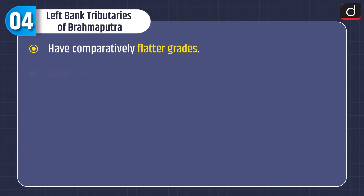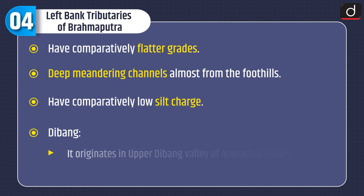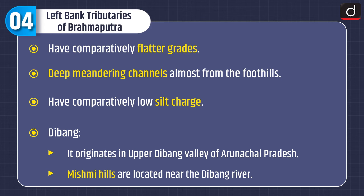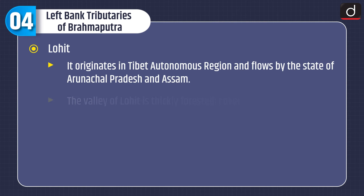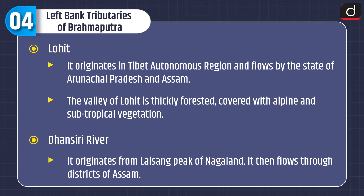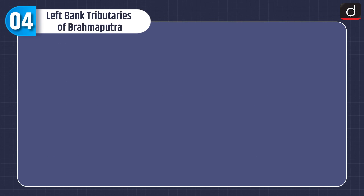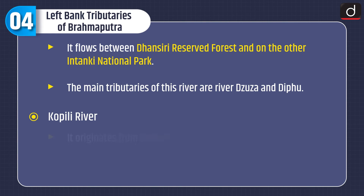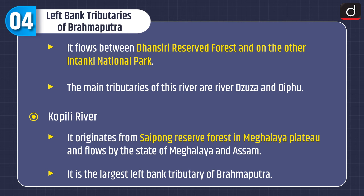Moving on to left bank tributaries of Brahmaputra: these have comparatively flatter grades, deep meandering channels almost from the foothills, and comparatively low silt charge. First is the Dibang, which originates in the upper Dibang valley of Arunachal Pradesh; the Mishmi hills are located near it. Next is the Lohit, which originates in the Tibet Autonomous Region and flows through Arunachal Pradesh and Assam; its valley is thickly forested with alpine and subtropical vegetation. The Dhansiri river originates from Laisang peak of Nagaland and flows through districts of Assam, between Dhansiri Reserved Forest and Tanki National Park; its main tributaries are the Zuza and Dipu rivers. Finally, the Kopili river originates from Saipong Reserve Forest in the Meghalaya Plateau and flows through Meghalaya and Assam; it is the largest left bank tributary of Brahmaputra.